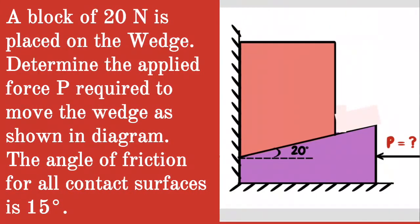Given question: a block of 20 N is placed over a wedge. Determine the applied force P required to move the wedge as shown in the diagram. The angle of friction for all contact surfaces is 15 degrees.